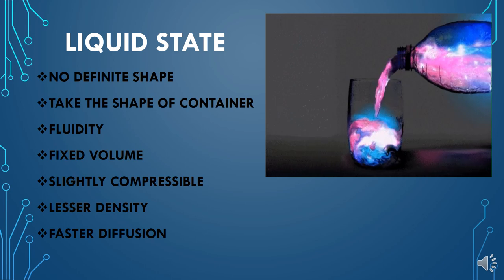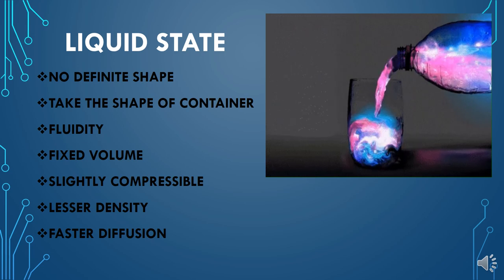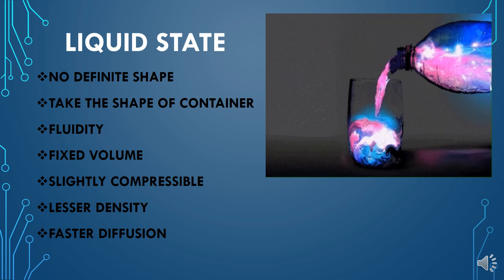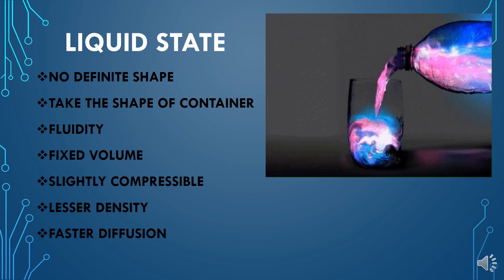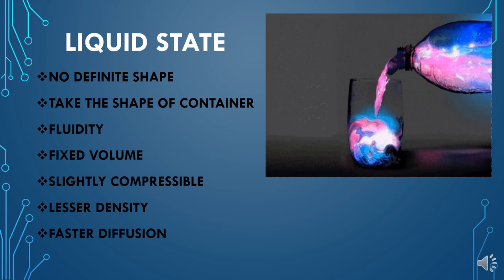Next is the liquid state. Liquids do not have a definite shape. For example, water: if you take water in a glass, it takes the shape of that glass. If you pour it into a bowl, plate, bottle, or any other container, it takes that shape. Because liquids do not have a definite shape, they take the shape of the container. This is because particles in liquids do not have close packing like solids, so particles cannot remain in fixed positions. That is why liquids take the shape of the container, and they can be easily poured — they flow from one container to another. This property is called fluidity.